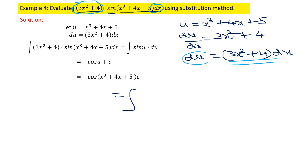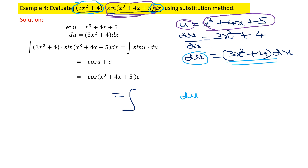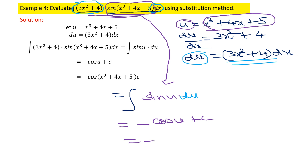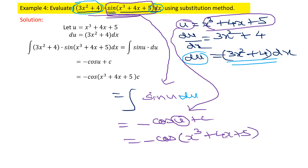The factor (3x² + 4) dx is simply du, and sin(x³ + 4x + 5) becomes sin(u). So the integral becomes ∫ sin(u) du, which is very simple. Integrating gives −cos(u) + C. Replacing u with x³ + 4x + 5, the final answer is −cos(x³ + 4x + 5) + C.